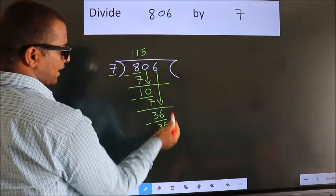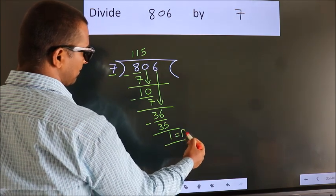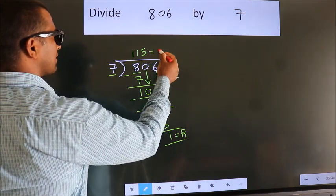No more numbers to bring it down. So we stop here. This is our remainder. This is our quotient.